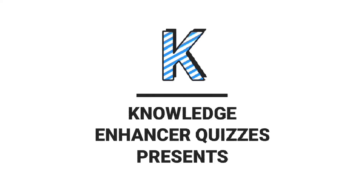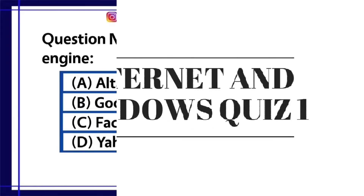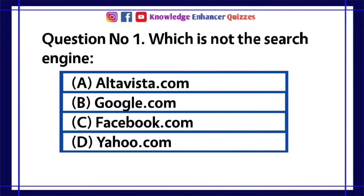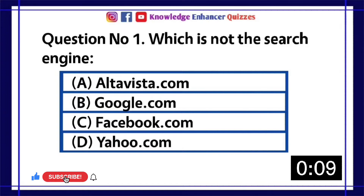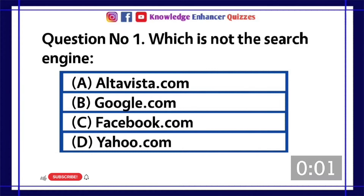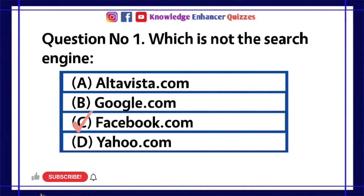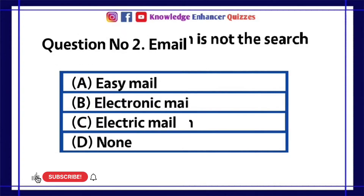Knowledge Enhancer Quizzes presents Internet and Windows Quiz 1. Question number 1: Which is not the search engine? A. Altavista.com, B. Google.com, C. Facebook.com, D. Yahoo.com. Option C is the right answer.